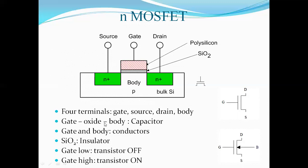An oxide layer is present between the body and the gate. The body terminal or substrate is made up of P-type semiconducting material. So for an N-type MOSFET we have two N-type semiconducting materials separated by the body or substrate. The SiO2 layer acts as an insulator and the remaining parts act as semiconducting material.